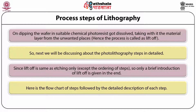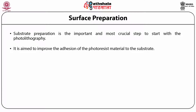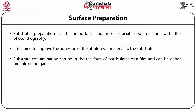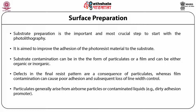Surface preparation is the most important and crucial step to start with photolithography. It is aimed to improve the adhesion of the photoresist material to the substrate. This is achieved by one or more of the following processes involving substrate cleaning and dehydration bake. Substrate cleaning is used to remove contamination, which can be in the form of particulates or a film, and can be either organic or inert. Defects in the final resist pattern are a consequence of particulates, whereas film contamination can cause poor adhesion and subsequent loss of line width control.